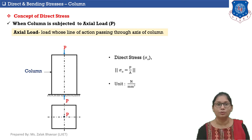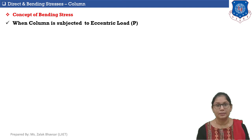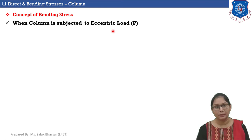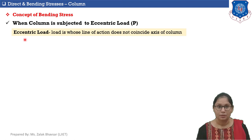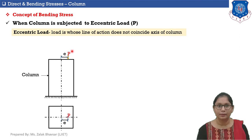Now let's move to the concept of bending stress. Whenever a column section is subjected to eccentric load, both direct stresses and bending stresses will be developed. First we need to define eccentric load: whenever a column section is subjected to a load whose line of action does not coincide with the axis of the column, that load is called eccentric load. In the given figure, the line of action of load P is away from the axis of the member.